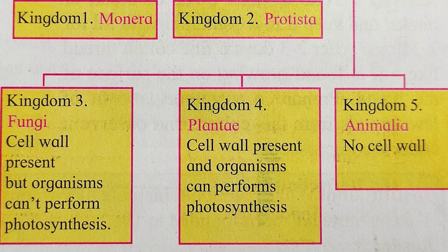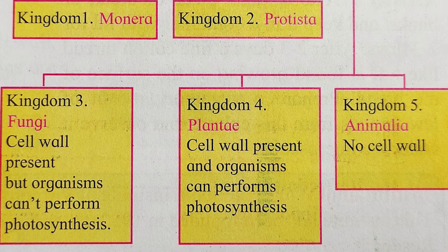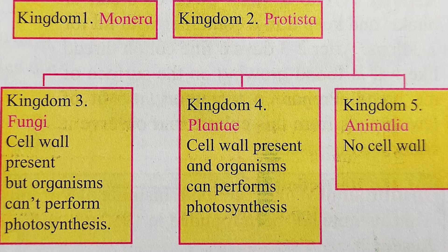Animals show holozoic nutrition. Most of them have the capacity for locomotion — they can move from one place to another. They are multicellular eukaryotes with a well-organized body. They lack chlorophyll as well as a cell wall. The cell wall is present in plants and fungi, but in animal cells, the cell wall is absent and they don't have chlorophyll, which is why they are heterotrophs. Growth is determinate, following a definite pattern up to a certain limit.